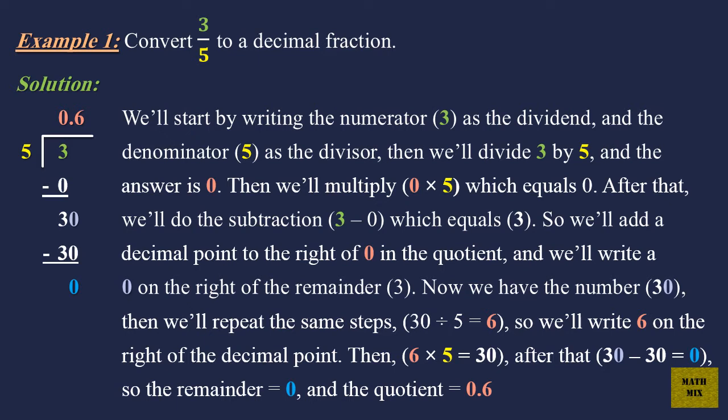And the answer is 0. Then we'll multiply, 0 times 5, which equals 0. After that, we'll do the subtraction, 3 minus 0, which equals 3.